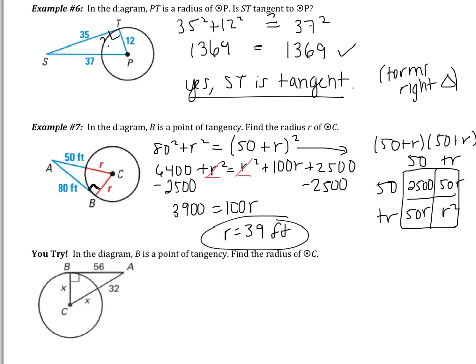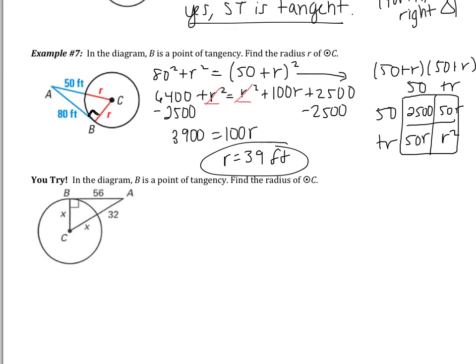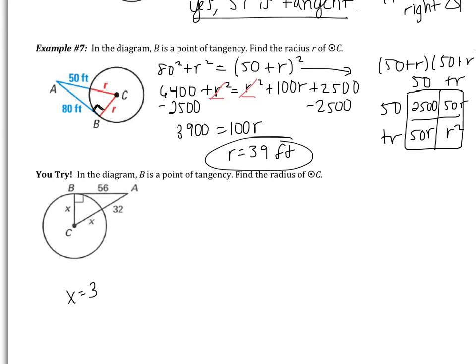The next example is very similar to Example 7 with new numbers. Take a minute to try it on your own. You should have gotten X = 33. If you did not get that, go back and fix your work. When you come to class tomorrow, I will be checking that you have all the work and the correct answer for this problem.